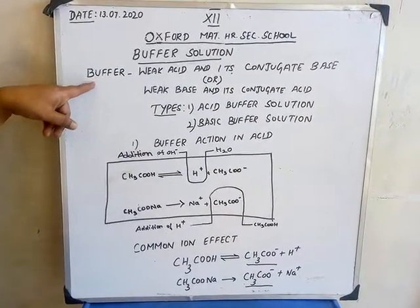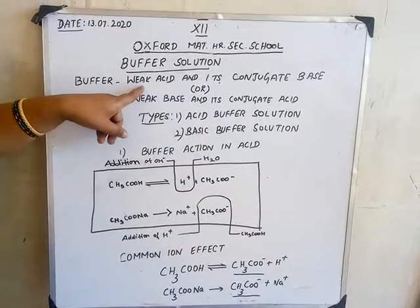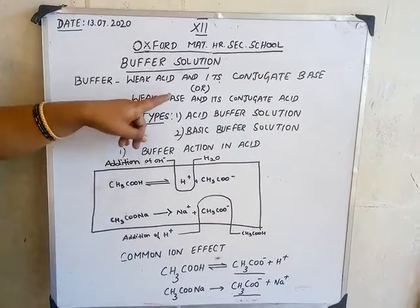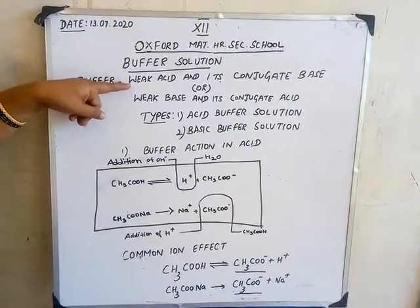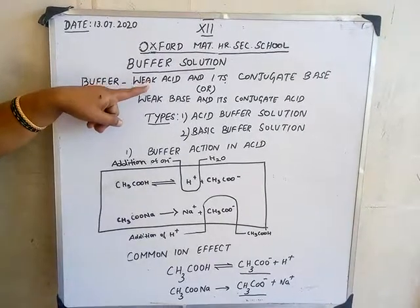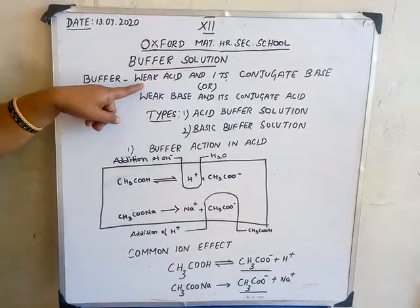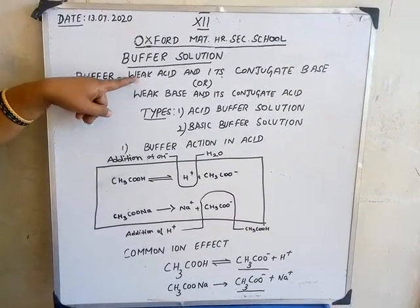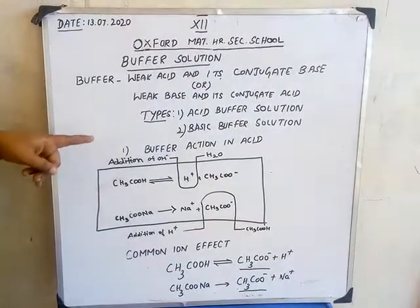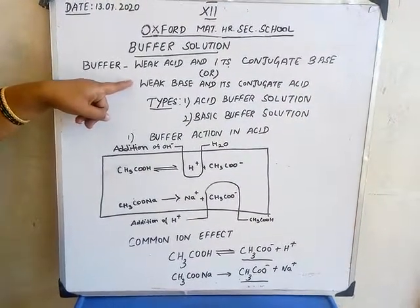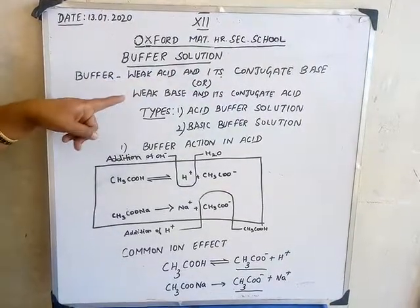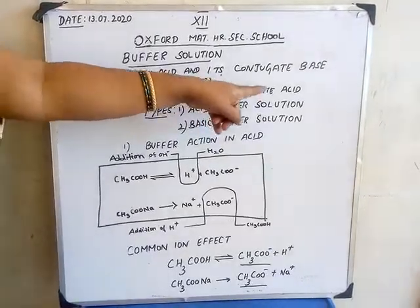What is buffer? Generally, there are two kinds of buffer solution. First, it is weak acid and its conjugate base. Second is weak base and its conjugate acid. You should know what is a weak acid — the acid which will dissociate partially is called a weak acid. The best example is acetic acid. So acetic acid and sodium acetate is an example for weak acid and its conjugate base. For weak base, ammonium hydroxide is the best example. Ammonium hydroxide and ammonium chloride — that is the example for weak base and its conjugate acid.